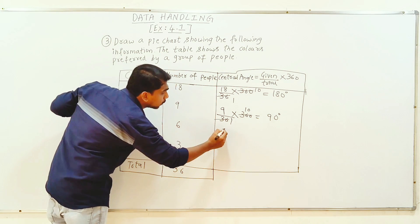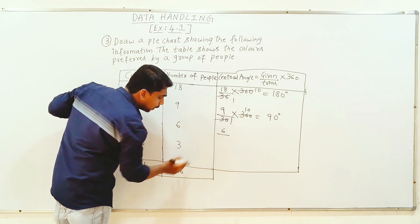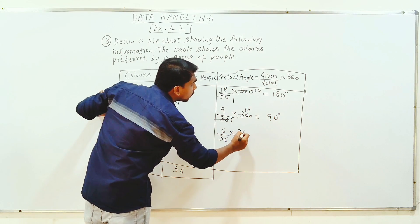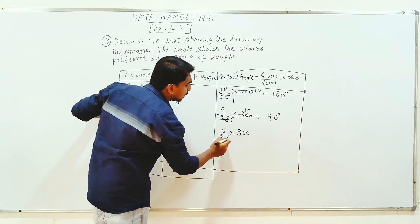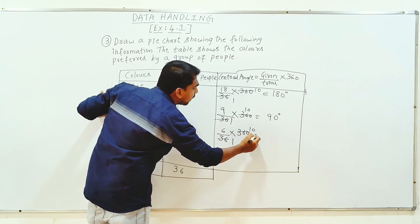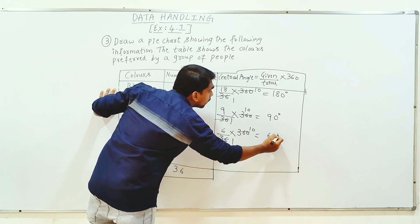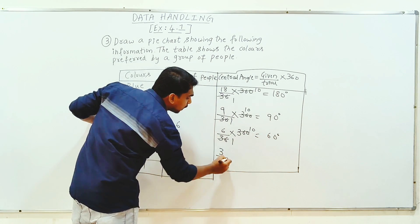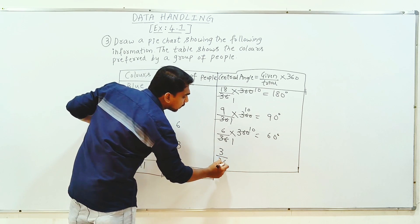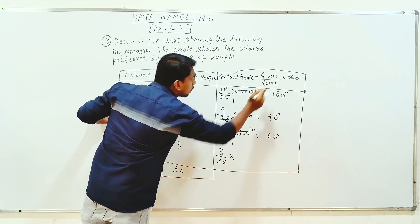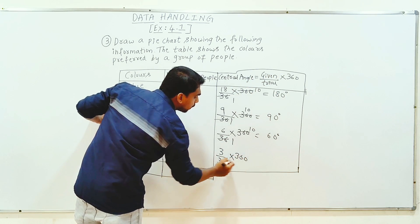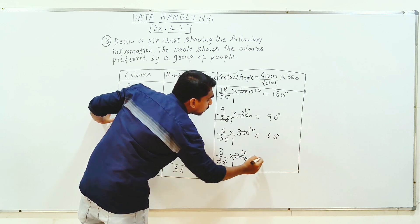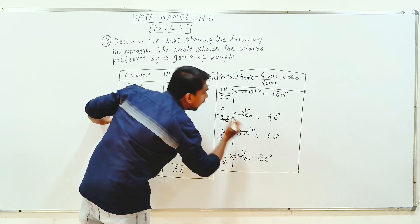Next, I am going to write the third color. Value divided by total, into 360. Cancel 3610, and 3 into 10 is 30 degrees.